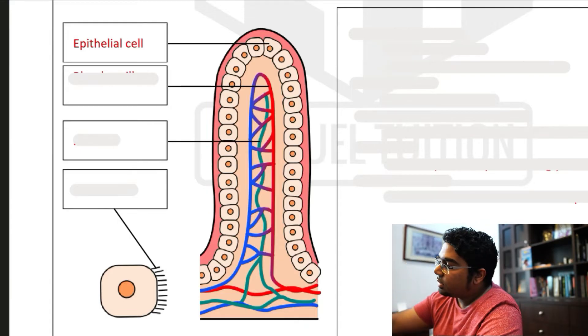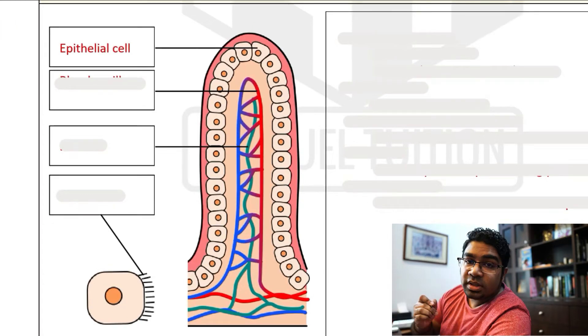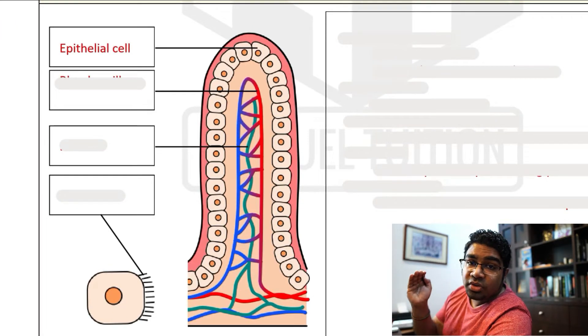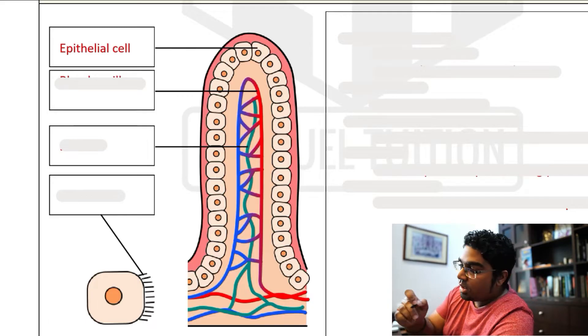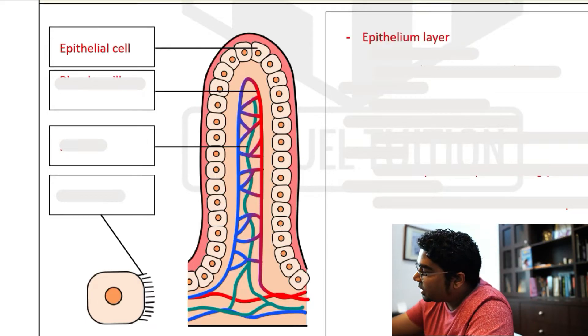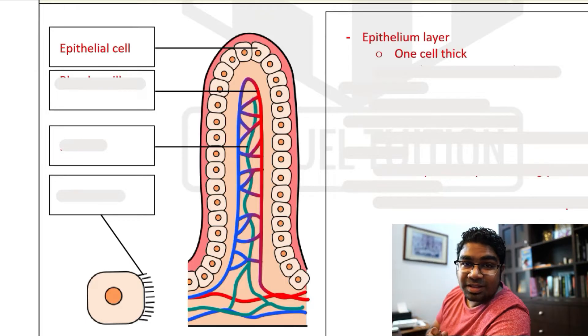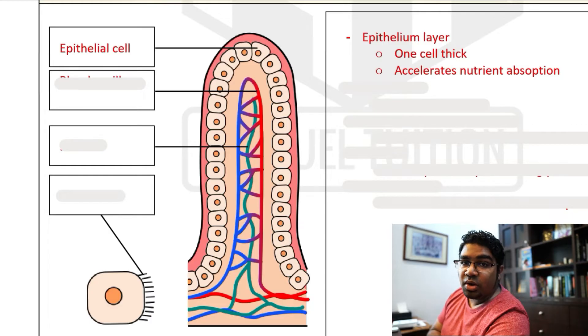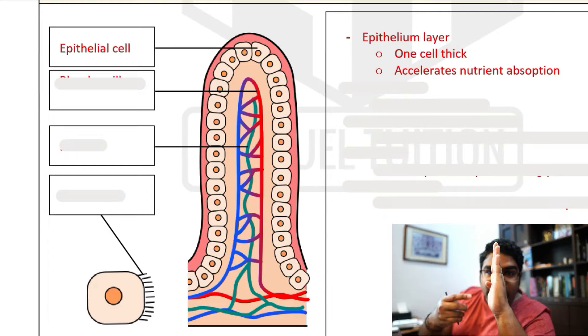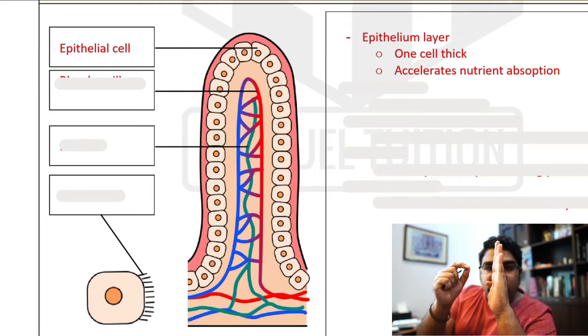And these epithelial cells, you can only see there is one layer of epithelial cell. So once again, the purpose of this is to ensure that the crossing over of the nutrients happens as efficiently as possible. We have an epithelial layer that's only one cell thick. And it accelerates nutrient absorption because it shortens the distance the nutrients need to travel to pass through.